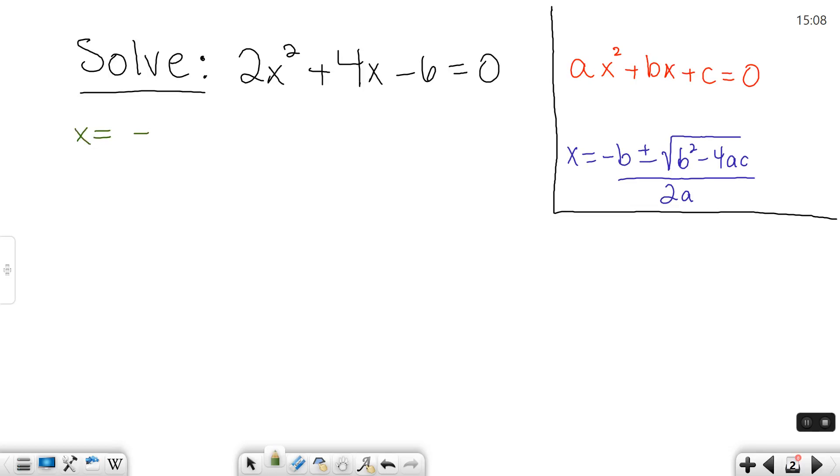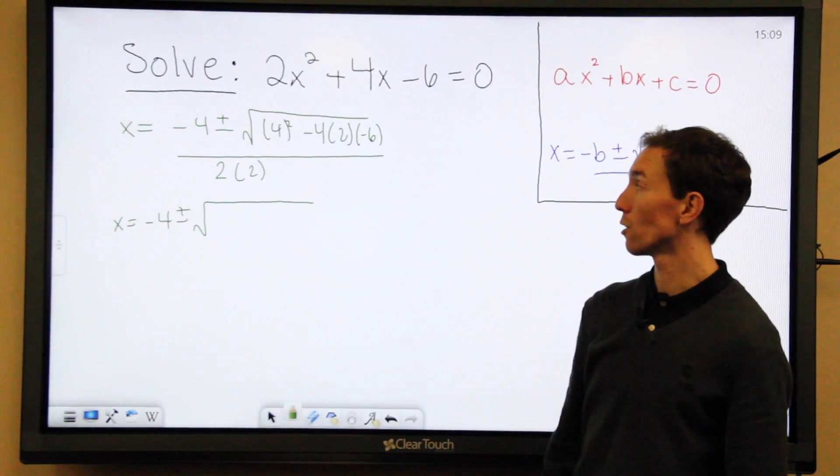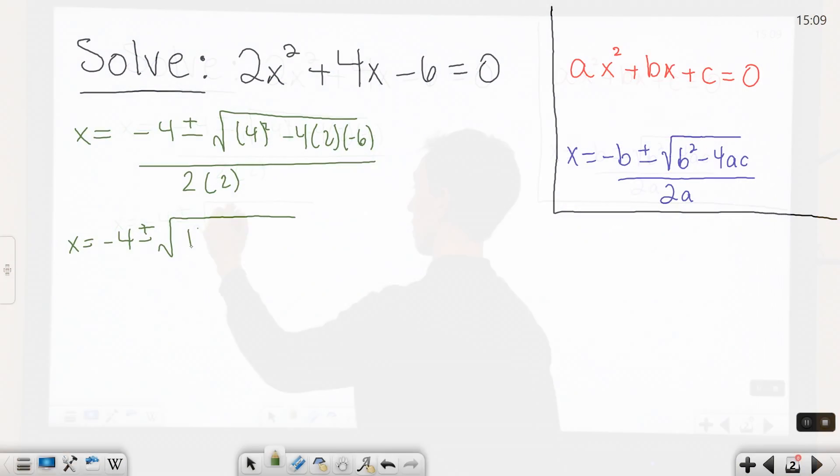So x equals negative b plus or minus the square root of b squared minus 4ac, all that over 2a. Once you've written it down, you can start simplifying and try and get your answer. So negative 4 out front, plus or minus 4 squared is 16. Minus 4 times 2 times negative 6 is going to get you negative 48. So minus negative 48 is like plus 48, all over 2 times 2 which is 4.